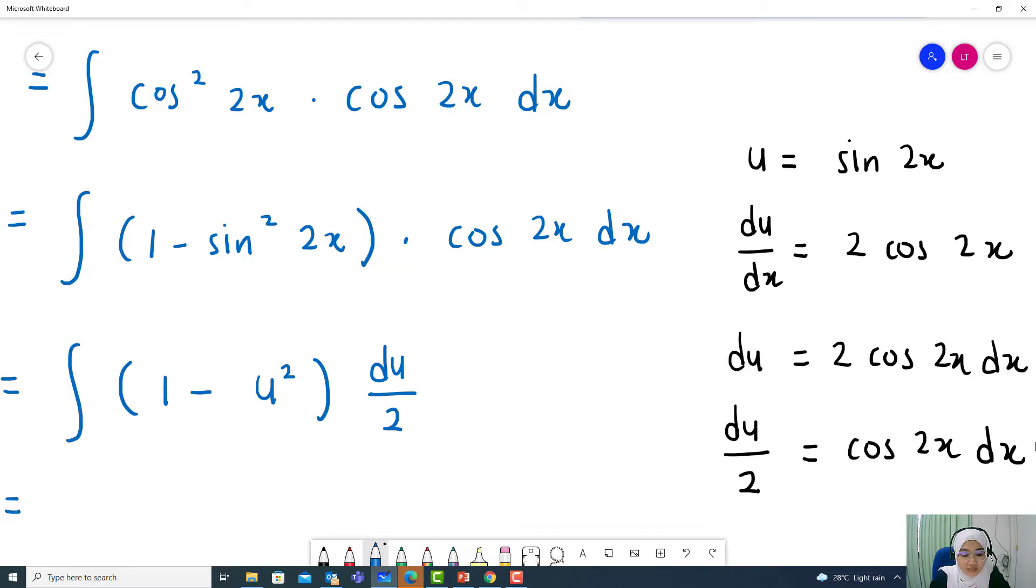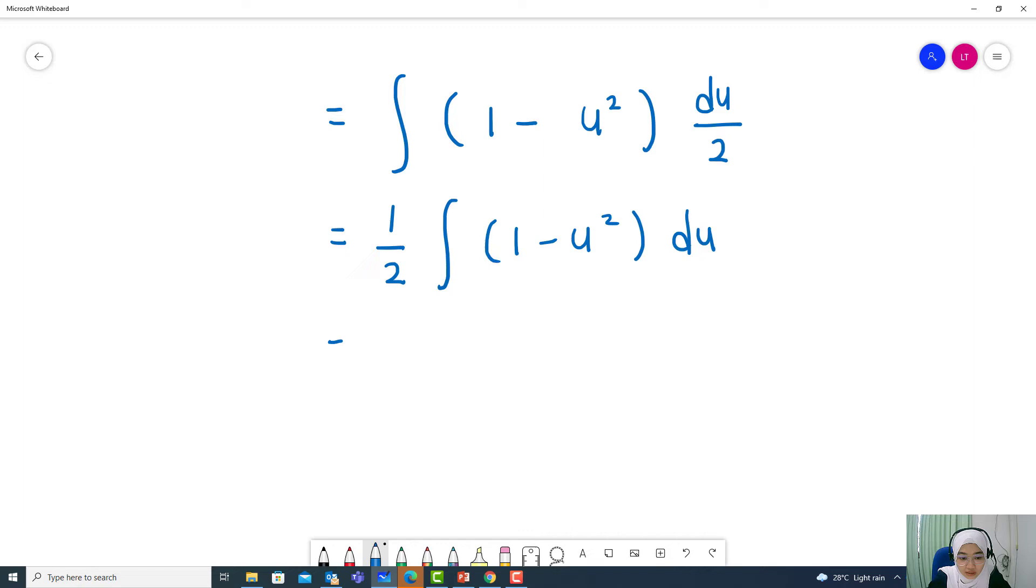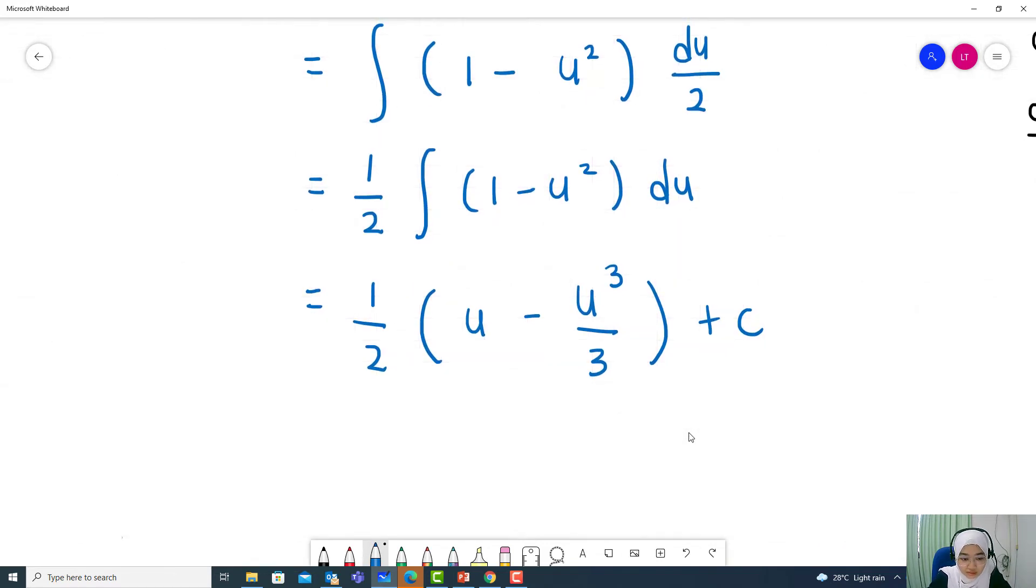And then simplify this expression, take out the constant 1 over 2, integrals of 1 minus u squared du equal to 1 over 2, integral 1 equal to u minus integral u squared u cubed divided by 3 plus c. And then substitute back u in terms of x equal to 1 over 2 sin 2x minus 1 over 6 sin cubed 2x plus c.